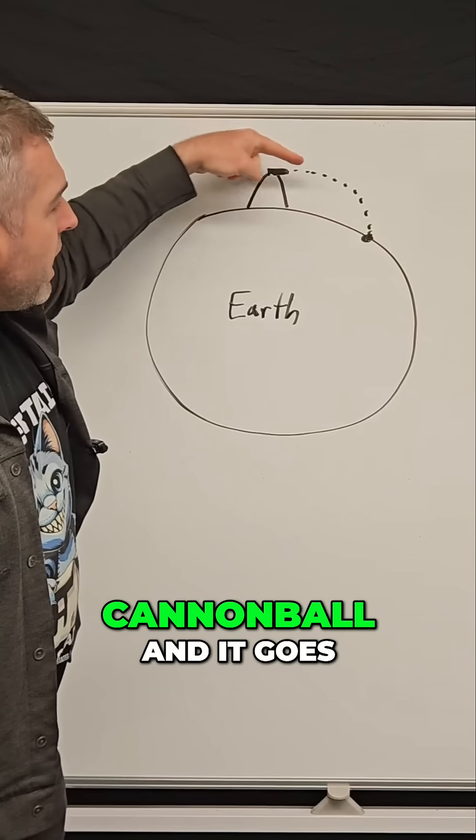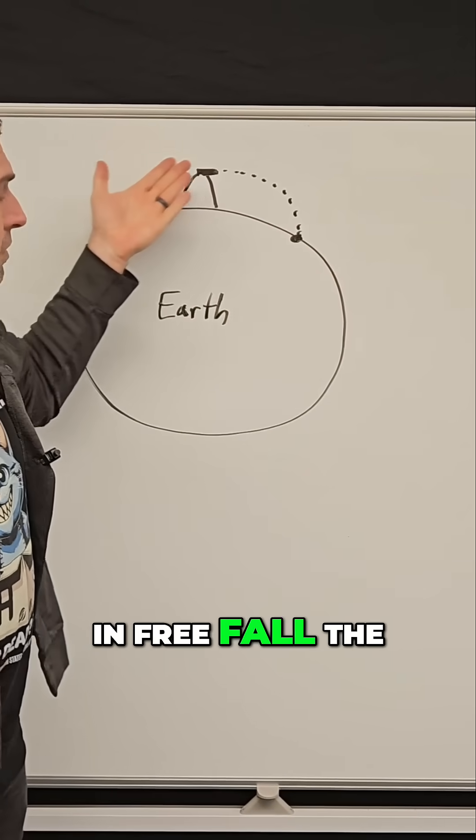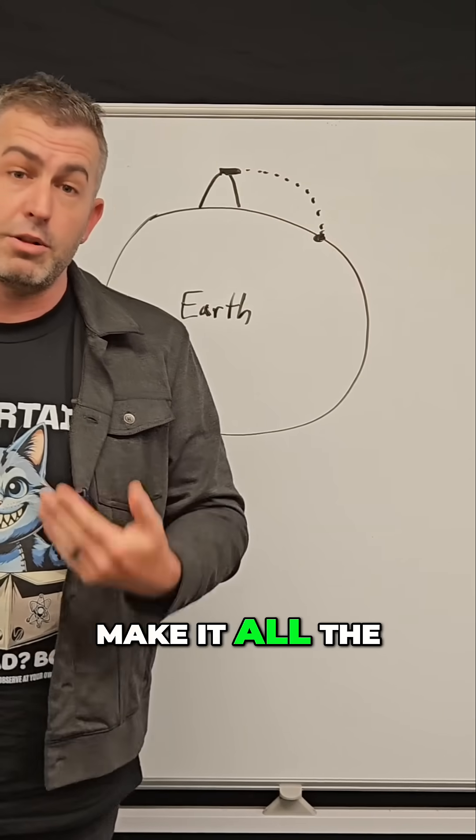So we fire the cannonball, and it goes pretty far, and it comes down and hits the planet. So it is still in free fall the whole time, but it's not gonna make it all the way around the Earth.